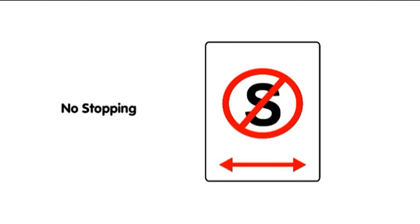This no stopping sign tells you that you cannot stop at the kerb for any reason or any amount of time. A yellow line painted along the edge of the road means the same as a no stopping sign.